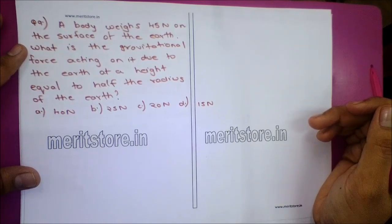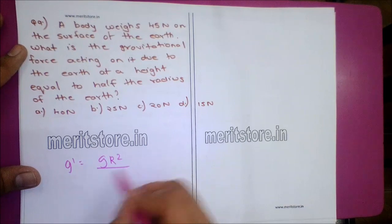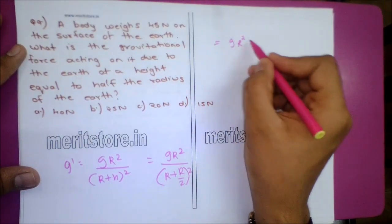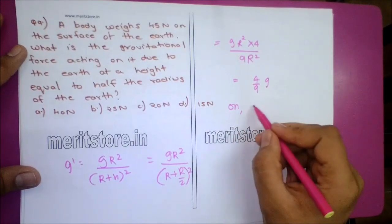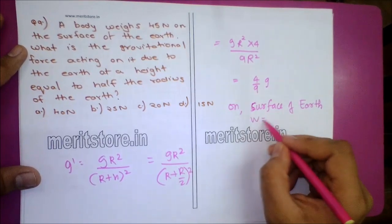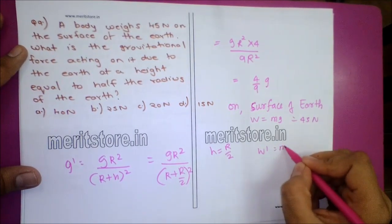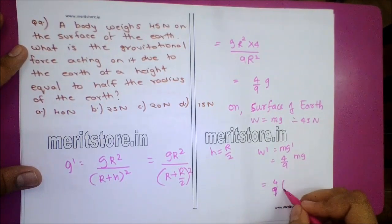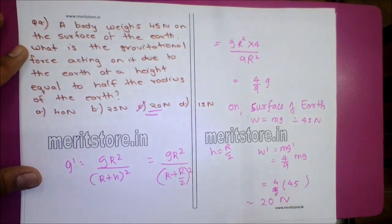Question 9: A body weighs 45 N on the surface of the Earth. What is the gravitational force at height equal to half the radius of the Earth? g' = gR²/(R + R/2)² = gR² × 4/(9R²) = 4g/9. Weight W = mg = 45 N, so W' = mg' = (4/9)mg = (4/9) × 45 = 20 N. Option C, 20 Newton, is the correct answer.